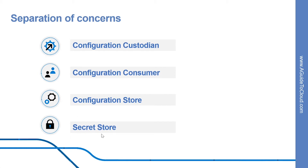And finally, secret store. While you can store configuration and secrets together, it violates our separation of concern principle. So the recommendation is to leverage a separate store for persisting secrets. This enables the operations team to have credentials, certificates, and tokens in one repository and minimize the security risk in case the configuration store gets compromised.